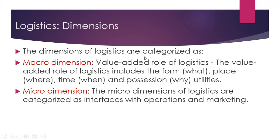The dimensions of Logistics can be categorized as Macro Dimension and Micro Dimension. The Micro Dimension includes the Value Added Role of Logistics, that is Form Utility (what to produce), Place Utility, Time Utility, and Possession Utilities. The Micro Dimension of Logistics also covers Interfaces with Operations and Marketing.